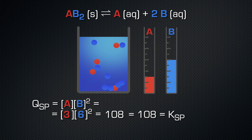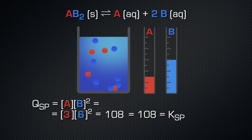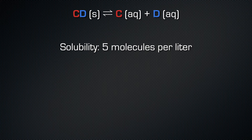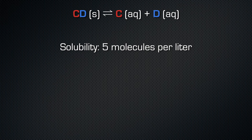There is always one particle AB₂ not dissolved in this solution. Here you see a second example. The salt CD dissolves into its ions C and D with a solubility of 5 molecules per liter. We have 5 particles C and 5 particles D in a saturated solution, resulting in a solubility product of 25.